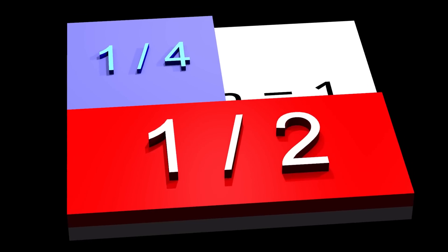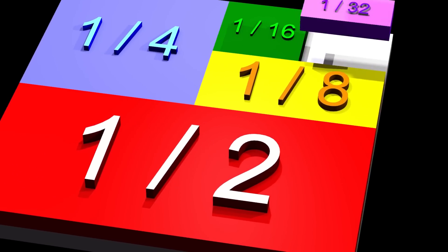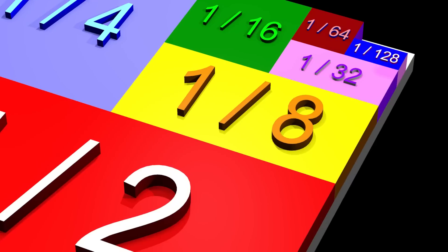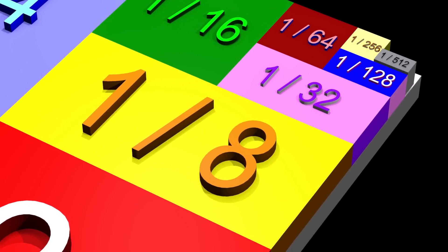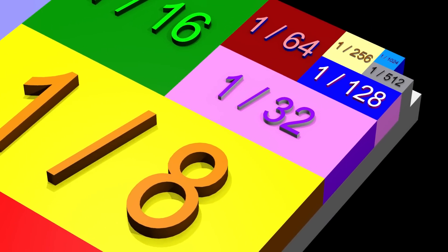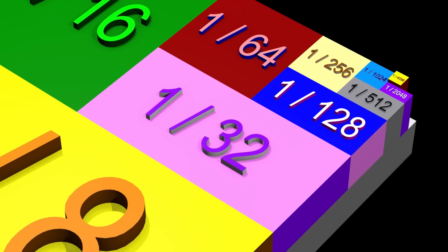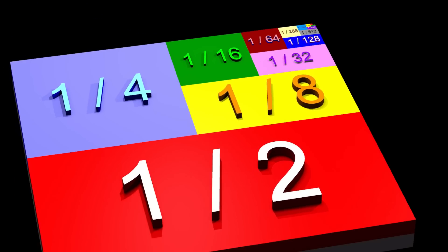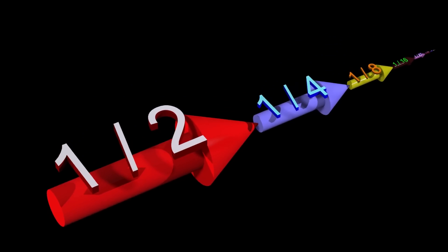Suppose we have a square with an area of 1. This square can be thought of as being composed of an infinite number of rectangles. The sum of the areas of all these rectangles must be equal to the area of the original square. Therefore, in this example, we have an infinite sequence of numbers that adds up to 1.